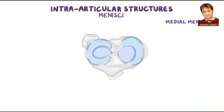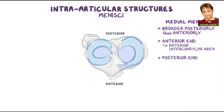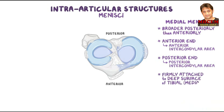The medial meniscus is C-shaped and broader posteriorly than anteriorly. Its anterior end is attached to the anterior intercondylar area of the tibia, and its posterior end is attached to the posterior intercondylar area. The medial meniscus also firmly adheres to the deep surface of the tibial collateral ligament.